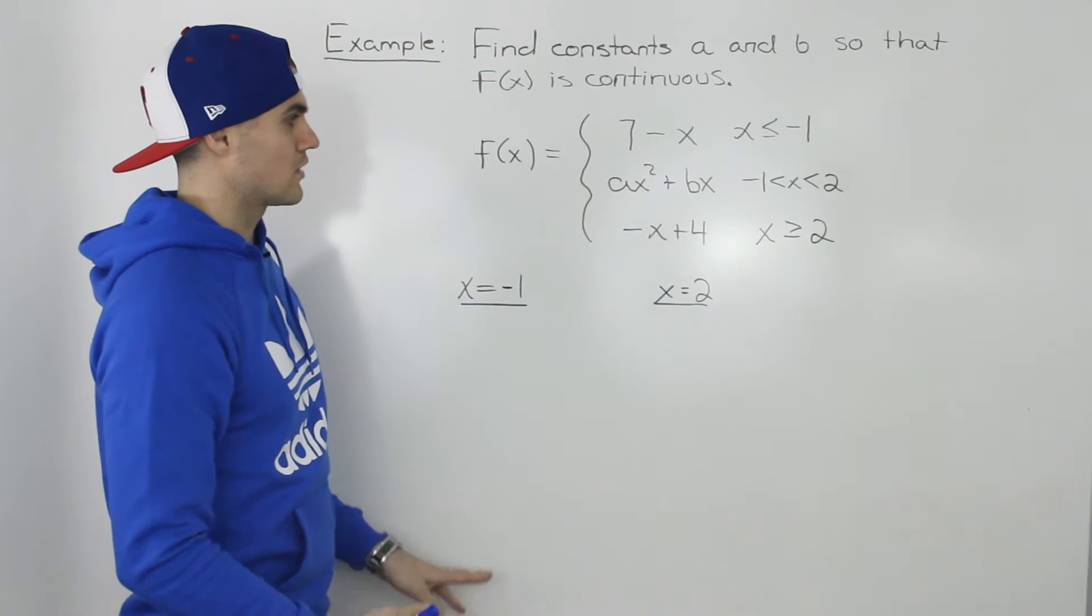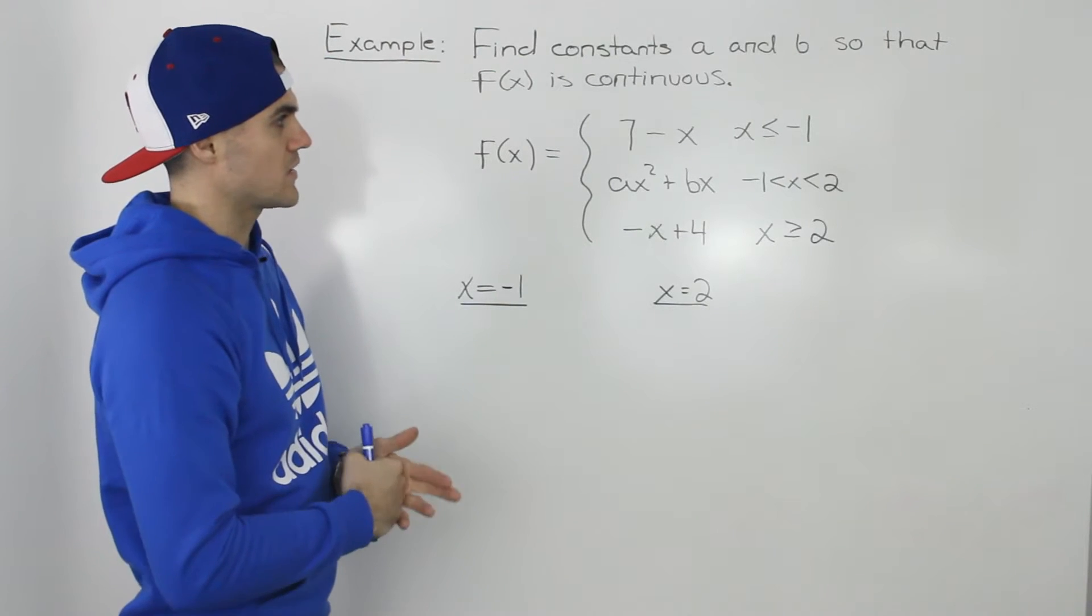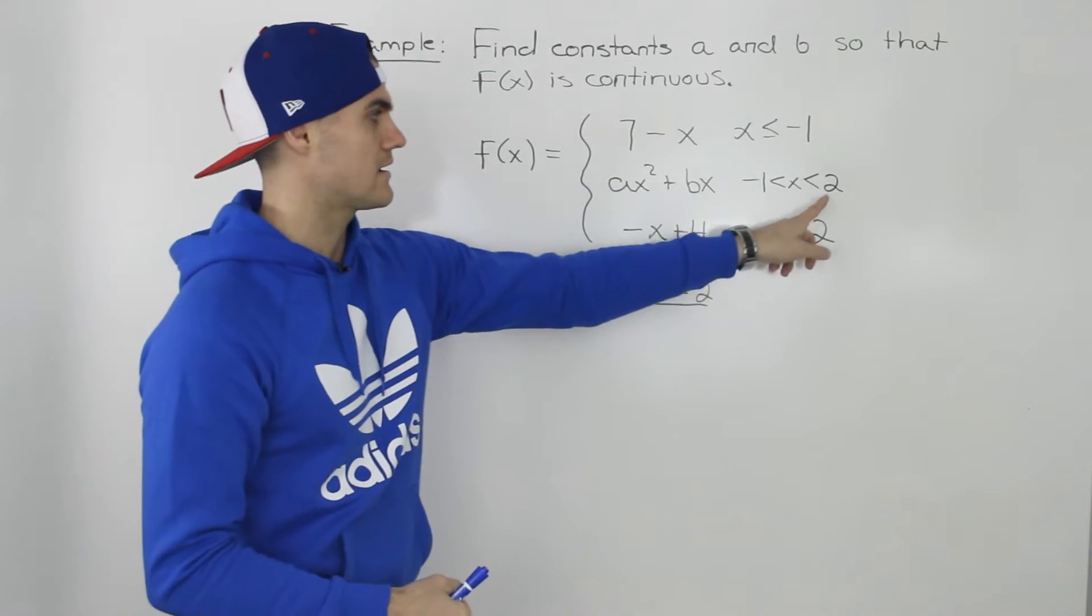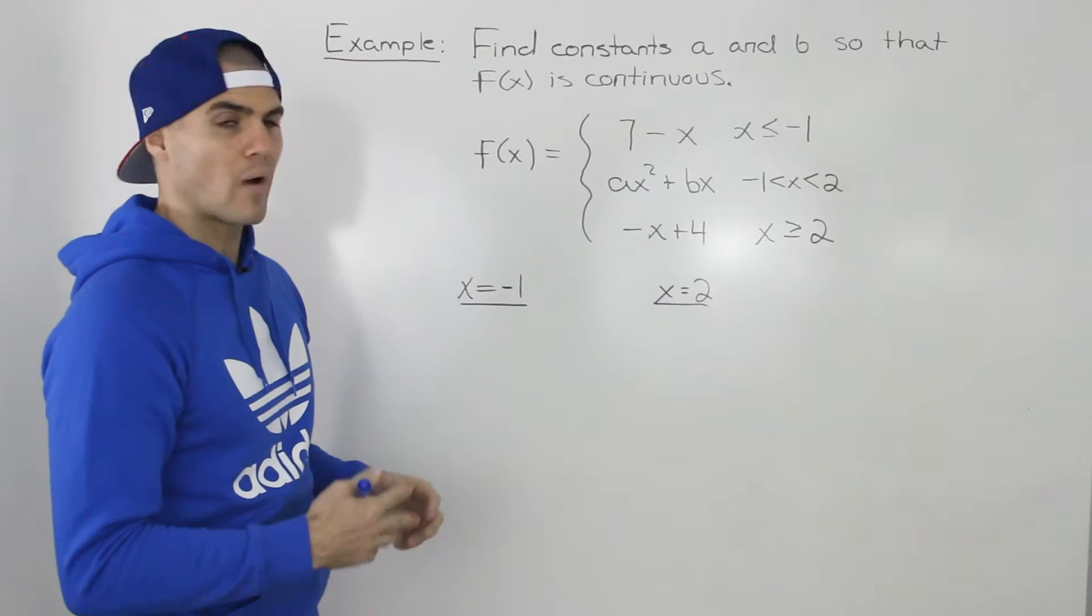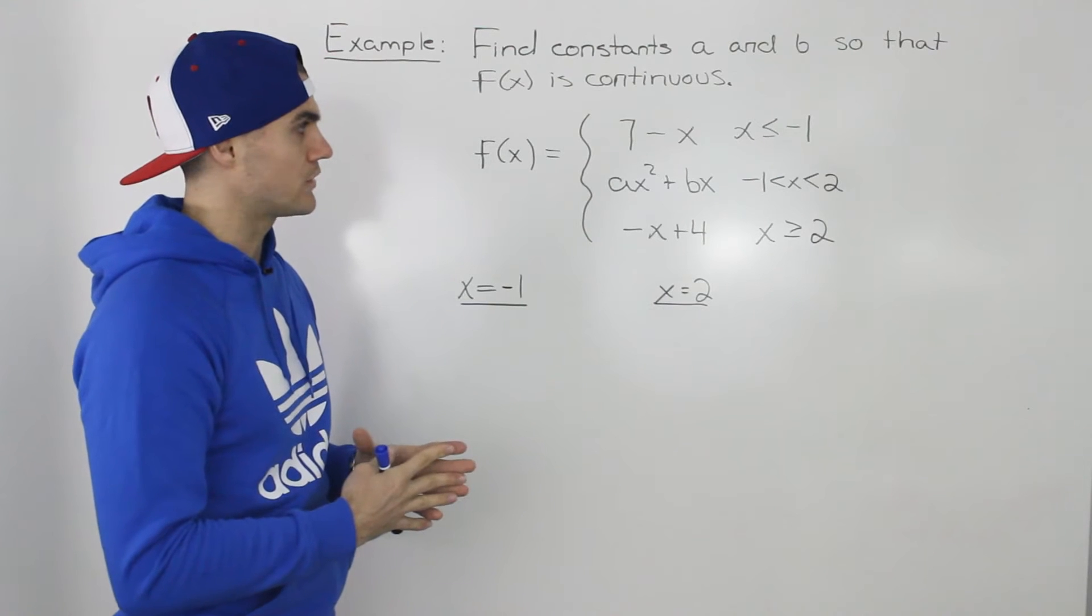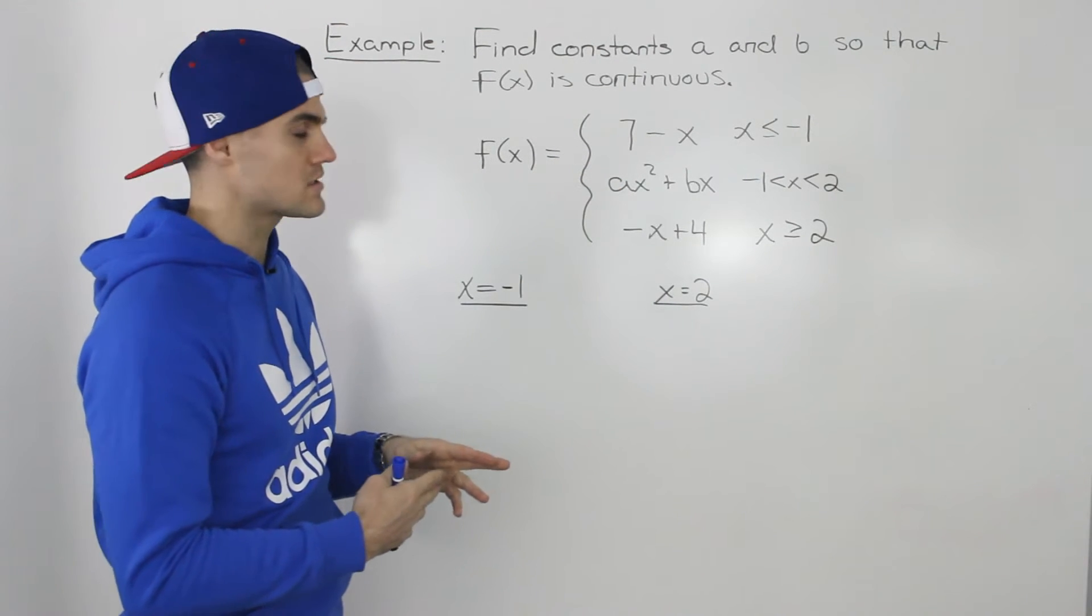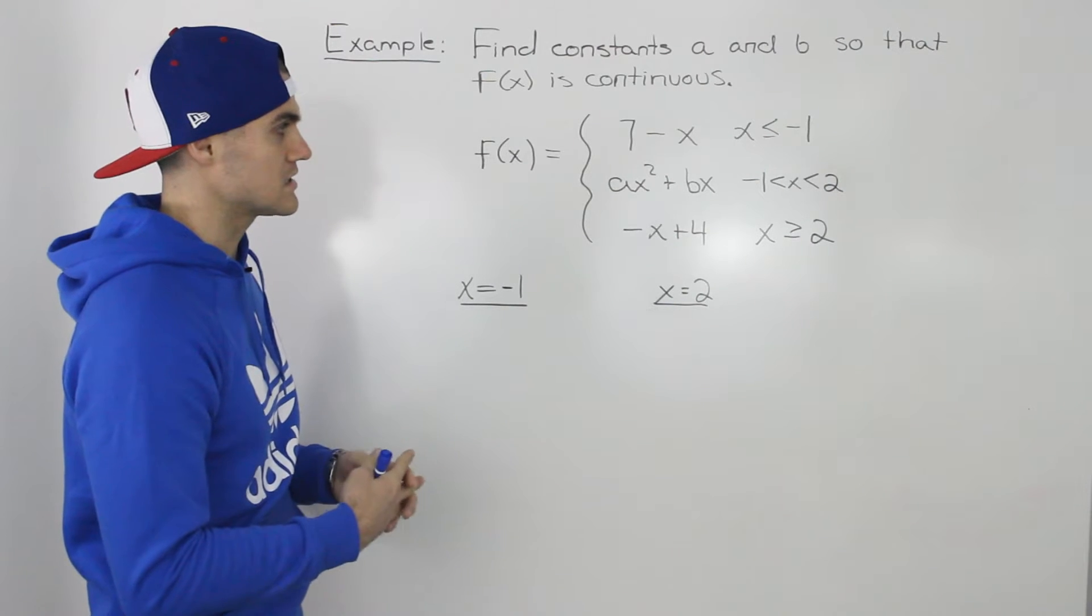Now notice how there are two meeting points in this piecewise function at x equals negative 1 and x equals 2. The y values at those meeting points have to be equal for all the pieces at those meeting points in order for the function to be continuous.